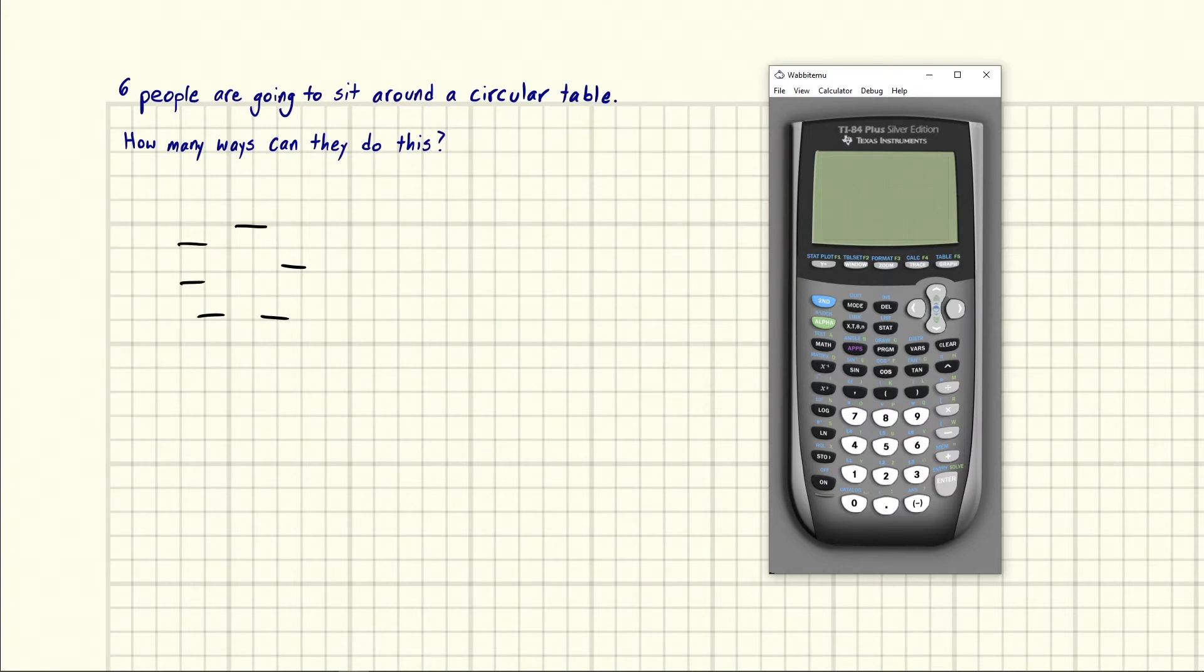And then you might say, okay, well, six people. So one of those six people has to go in the first spot. So we have six options. Then we only have five options, four options, three options, two options, one option. And you might be tempted to go, oh, well, it's six factorial. This seems to be the way it would be, right?